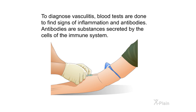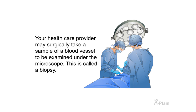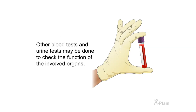To diagnose vasculitis, blood tests are done to find signs of inflammation and antibodies — substances secreted by the cells of the immune system. Your health care provider may surgically take a sample of a blood vessel to be examined under the microscope; this is called a biopsy. Other blood tests and urine tests may be done to check the function of the involved organs.